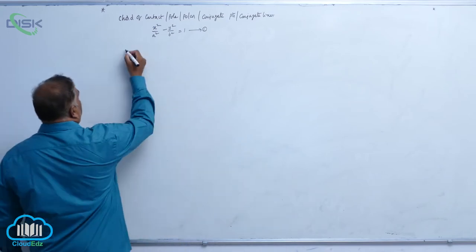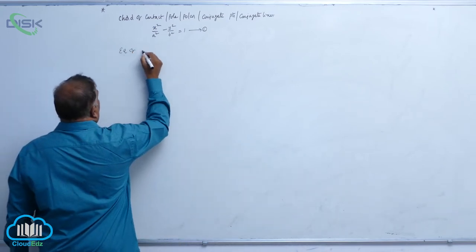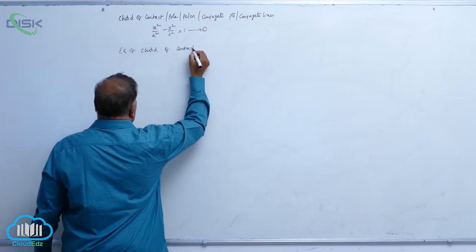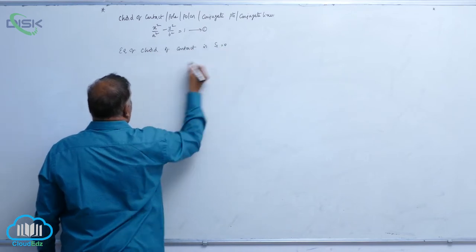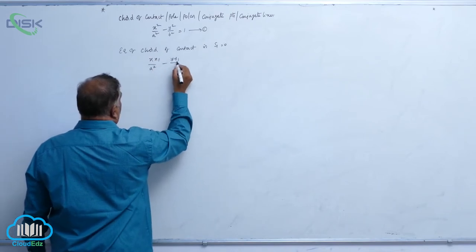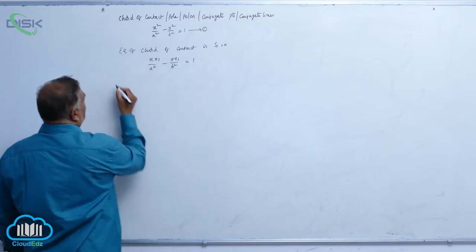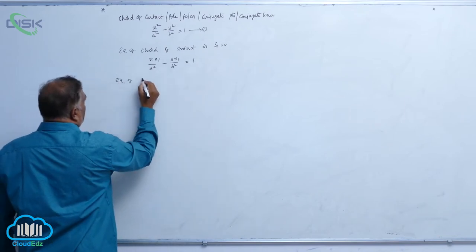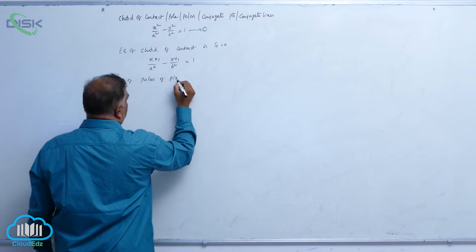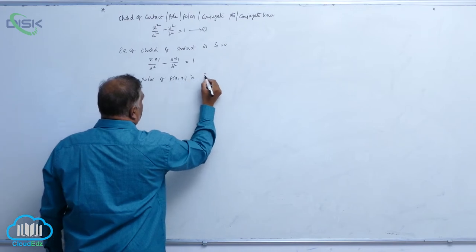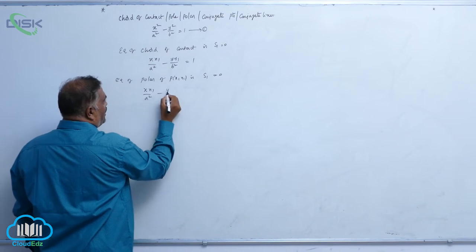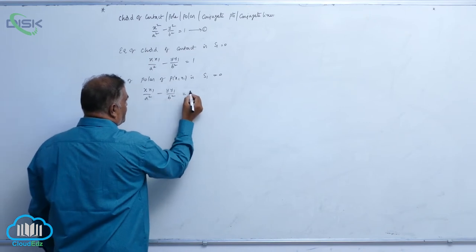So let us observe: the equation of chord of contact is S1 equal to 0, which can be written as xx1 by a square minus yy1 by b square equal to 1. Even if you want to write the equation of polar of point P(x1, y1), it is S1 equal to 0: xx1 by a square minus yy1 by b square equal to 1.